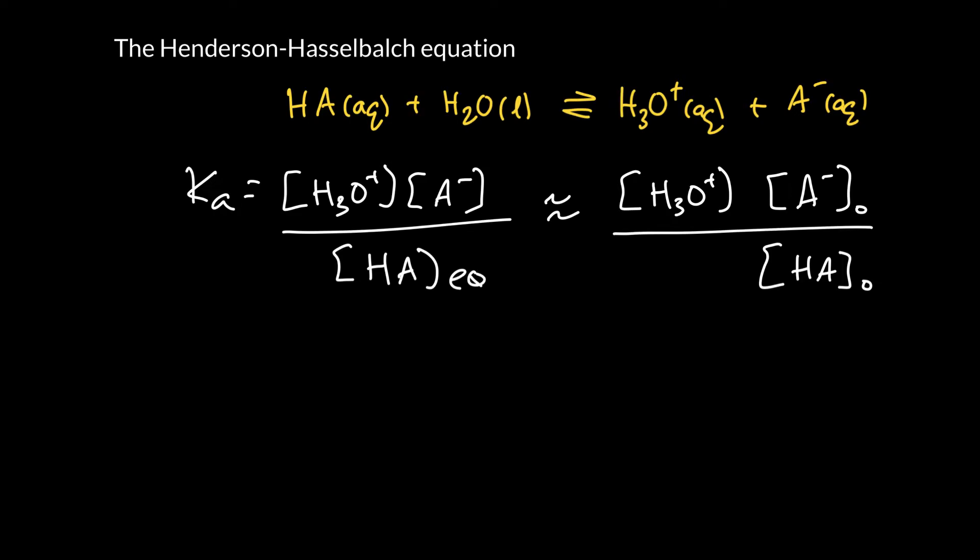If we want to find the pH, we need to rearrange the equation for the thing that controls pH. That is the hydronium concentration. And we'll see that's equal to Ka times by the original concentration of acid over base. And the pH is the negative logarithm of that.